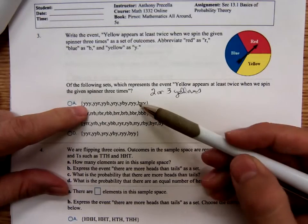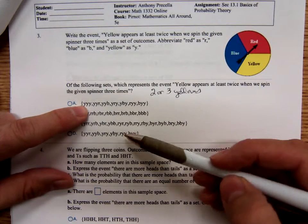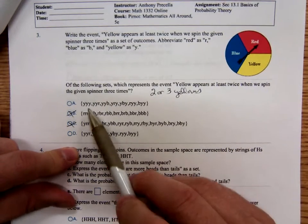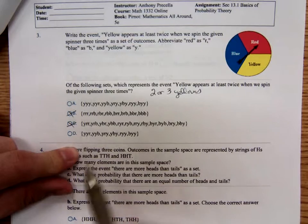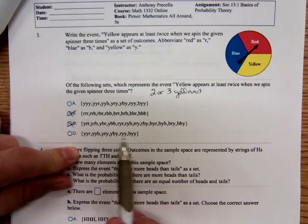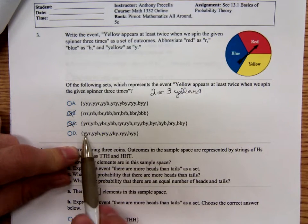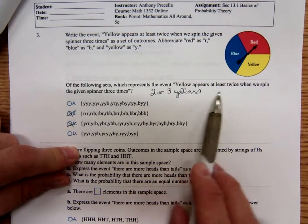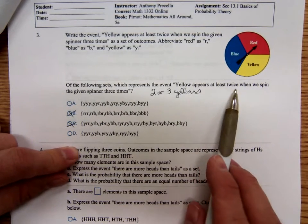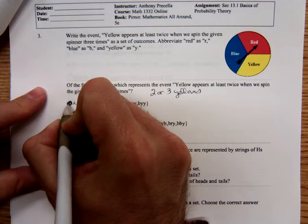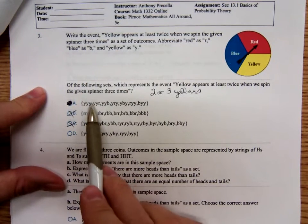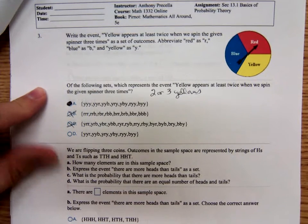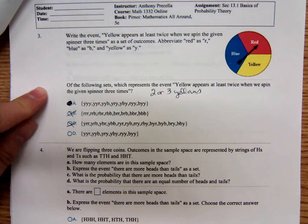It's either A or D, but you see A includes the three yellows. B doesn't have the yellow, yellow, yellow. D only has just two yellows. It doesn't have the three yellows. And since it says yellow appears at least twice, the answer is going to be A, because that has all of the times yellow appears twice, plus the one time yellow would appear three times.